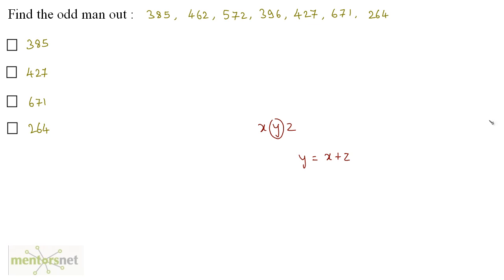In the first number, we can see that 5 plus 3 gives you 8. In the second, we have 4 plus 2 gives you 6. And in the third, 5 plus 2 is 7. Here, 3 plus 6 is obviously 9. 4 plus 7 does not give you 2.